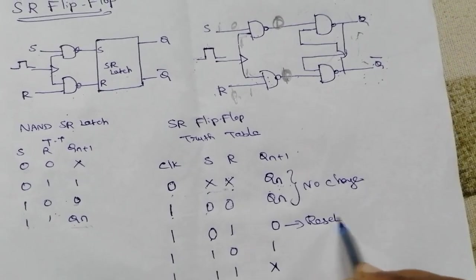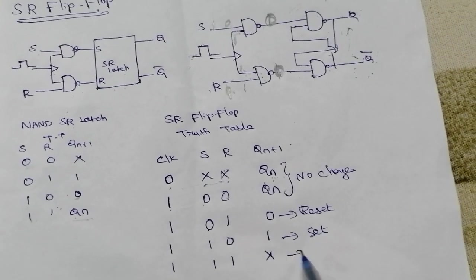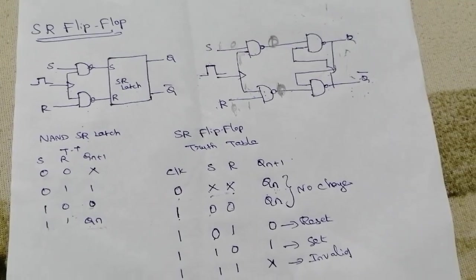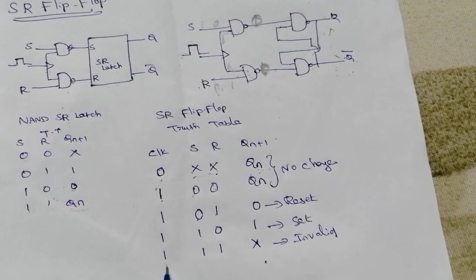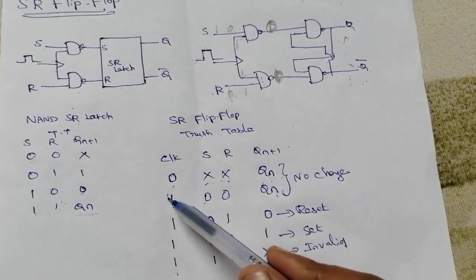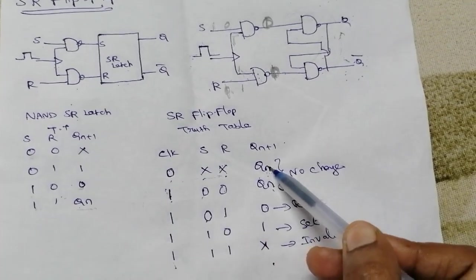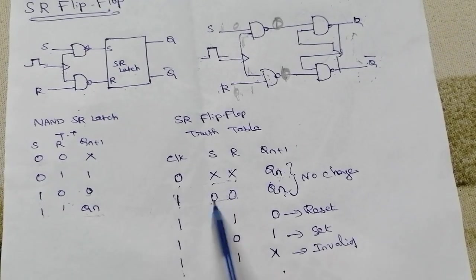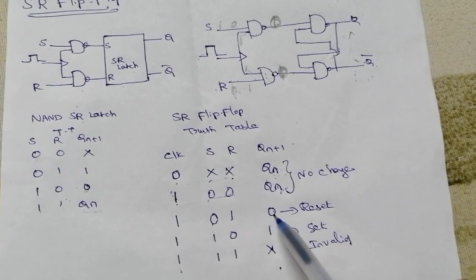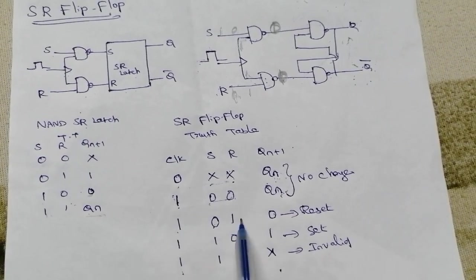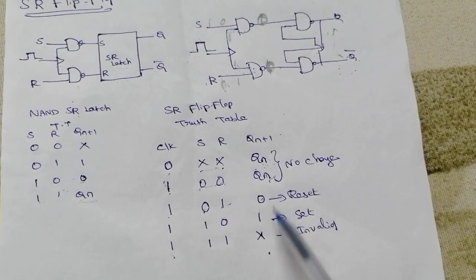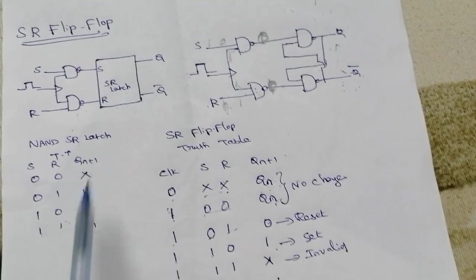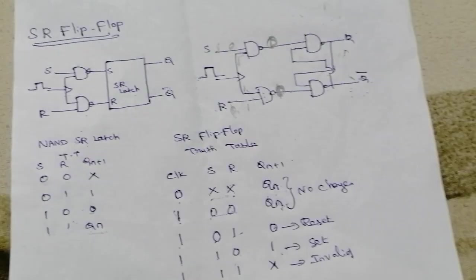To summarize the SR flip-flop truth table: SR=00 with clock high gives no change (previous state); SR=01 gives the reset state (Q=0); SR=10 gives the set state (Q=1); and SR=11 gives the invalid state. Whenever the clock signal is high, there is a possibility of output change based on the SR input combination.